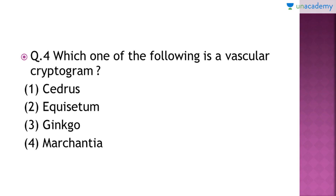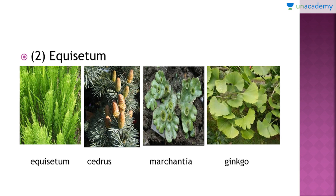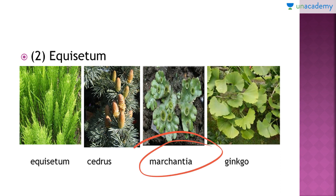Question number 4: which one of the following is a vascular cryptogam? The right answer is option number 2, that is Equisetum. Here you can see the picture of all four options: Equisetum, Cedrus, Marchantia, and Ginkgo. Out of the four, only Equisetum has vascular bundles. Cedrus and Ginkgo are non-vascular gymnosperms, and Marchantia is a type of bryophyte and therefore lacks vascular bundles.